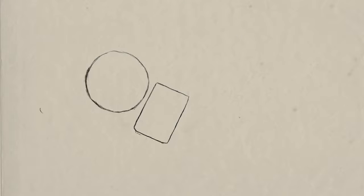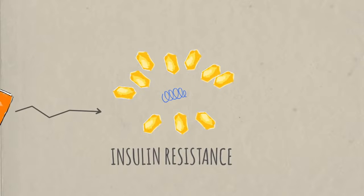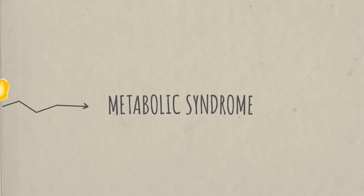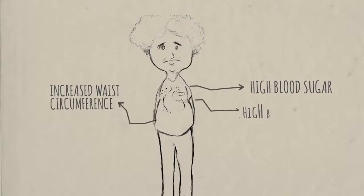Chronically consuming a lot of carbohydrates may lead to insulin resistance, and many scientists believe that insulin resistance leads to a serious condition called metabolic syndrome. That involves a constellation of symptoms, including high blood sugar, increased waist circumference, and high blood pressure.